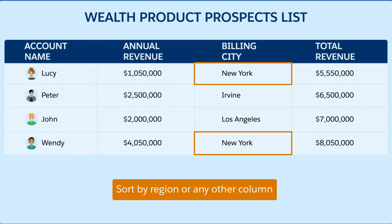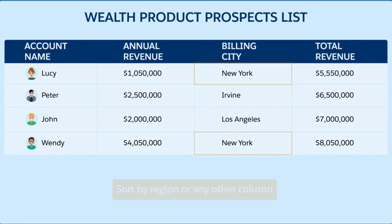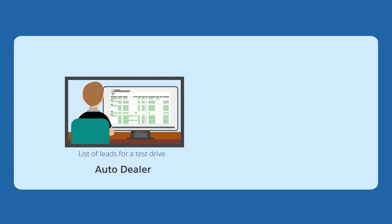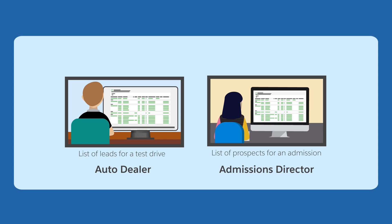You can create a variety of actionable lists based on your needs. For example, as an auto dealer, you can create a list of leads for a test drive and follow up on store visit outreach initiatives. Or, as an admissions director, create a list of prospects for an admissions initiative.